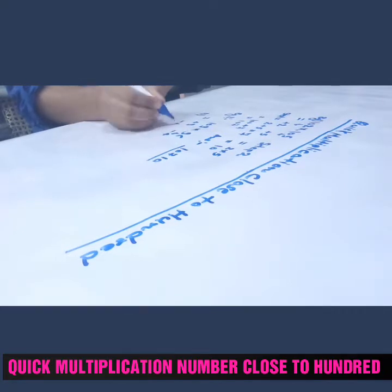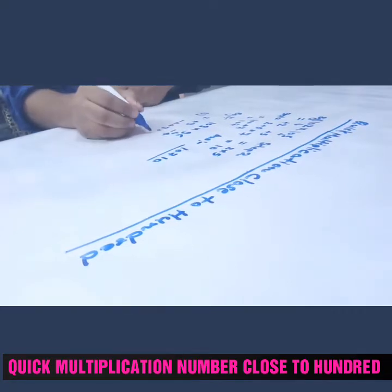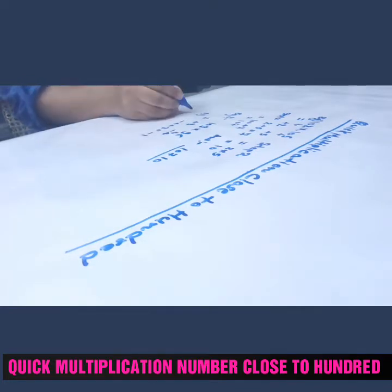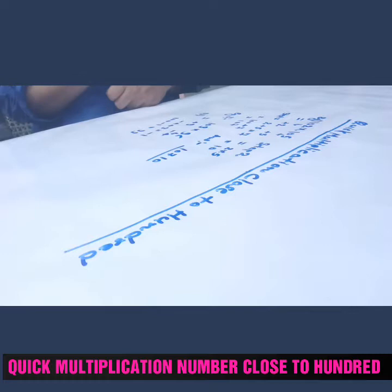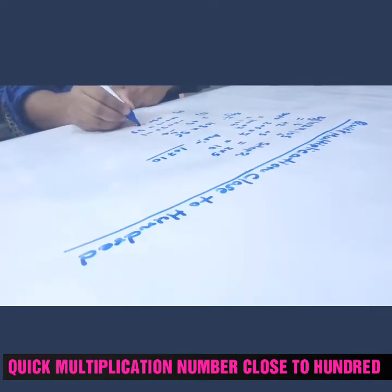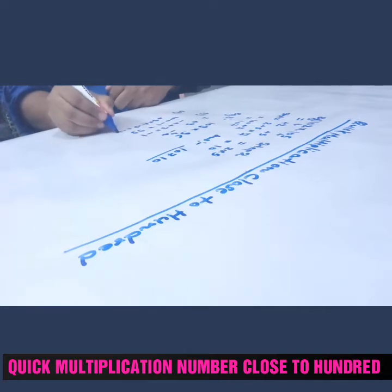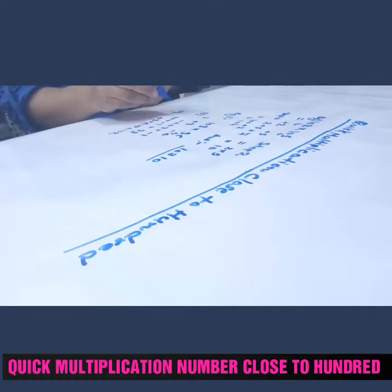Minus four plus three equal minus one, right? And then again you have 100 minus one, so this is 99. And step two is multiply this two number, plus three into minus four. Minus twelve is minus twelve.